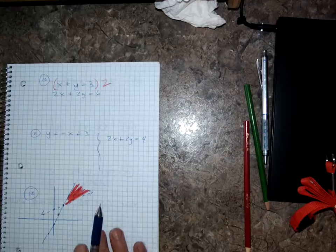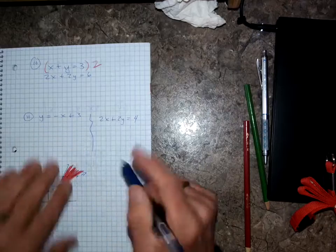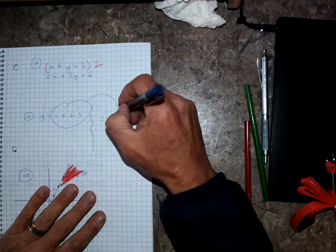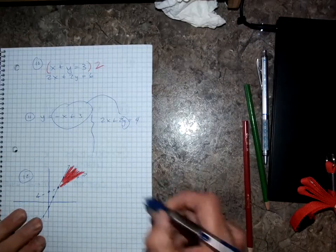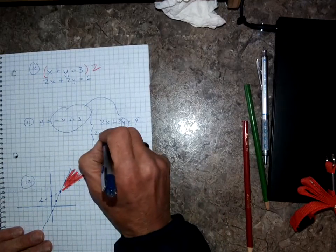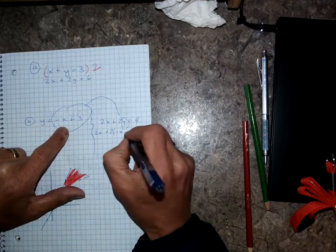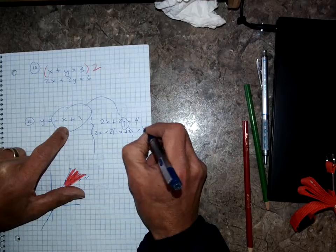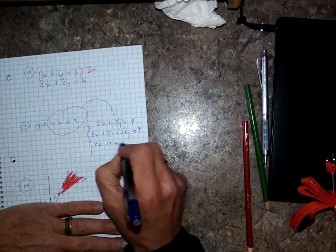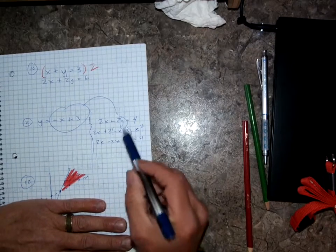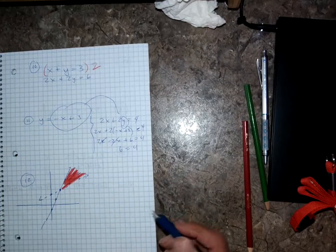Number eleven: I'll do this by substitution — I wrote them side by side because I put this in for y. So instead of writing y, I write negative x plus 3. That gives me 2x plus 2 times (negative x plus 3) equals 4, which becomes 2x minus 2x plus 6 equals 4 — so 6 equals 4. That's false, so there's no solution.